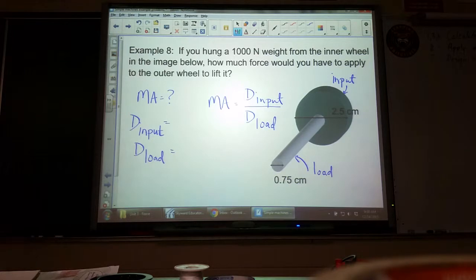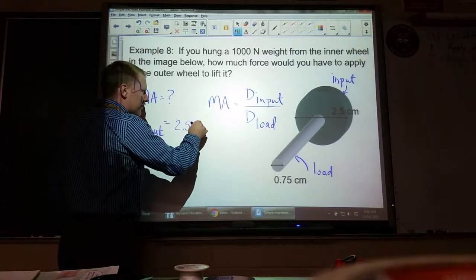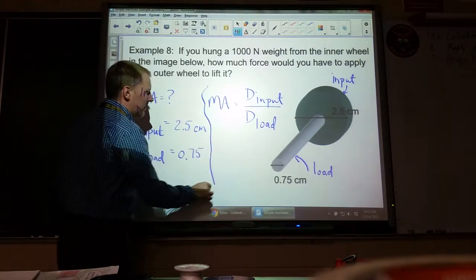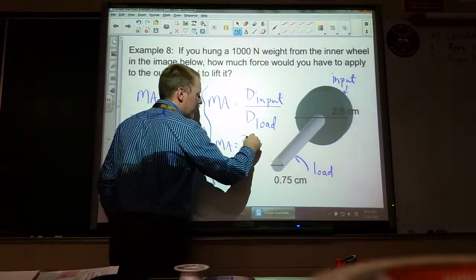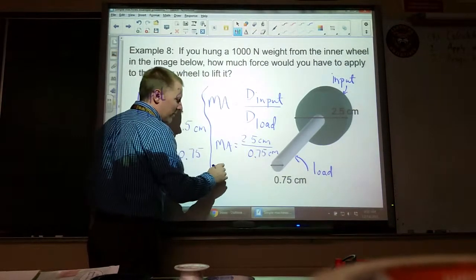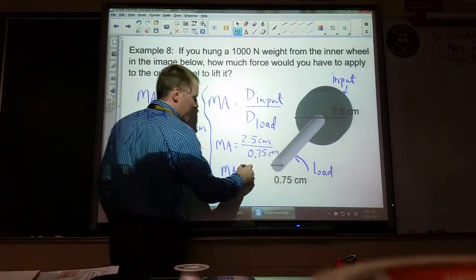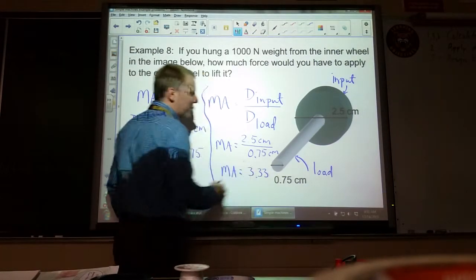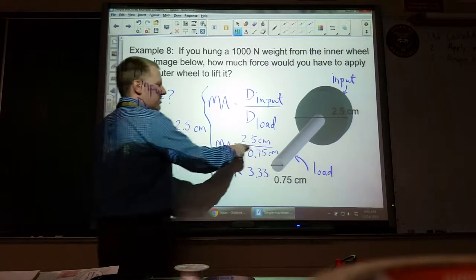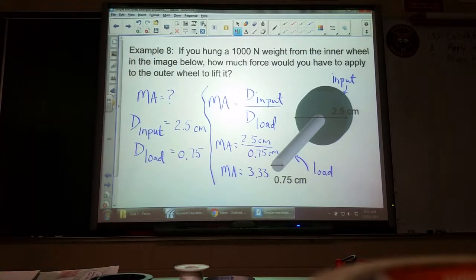The inner wheel is the load. You've got to read each of these carefully because they actually could be used either way. Our previous example, as George pointed out, was flipped. So the diameter of our input is the bigger wheel, 2.5 centimeters. Diameter of our load is the smaller, 0.75. Now if I put that into my mechanical advantage, I have 2.5 here for my input, 0.75 for my load. That's 3.33. We can't assume those are exact, so 3.33.